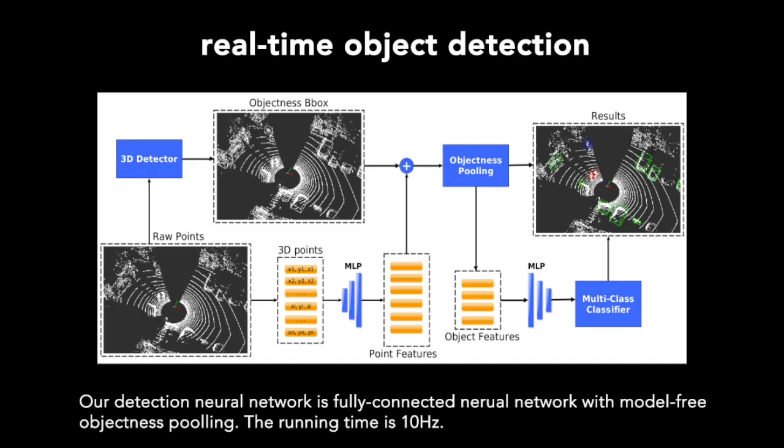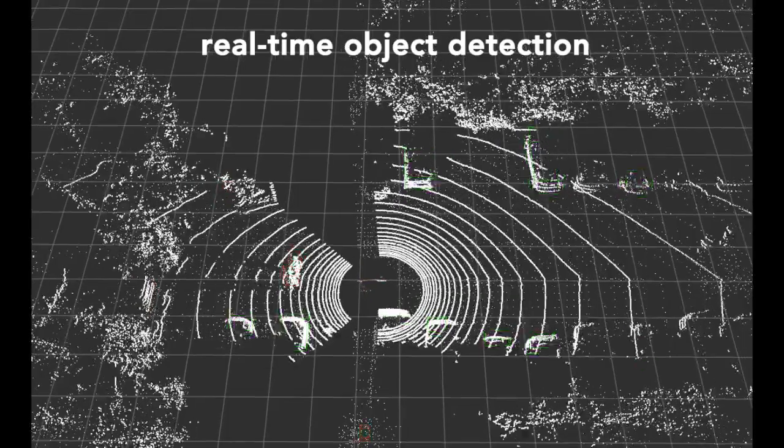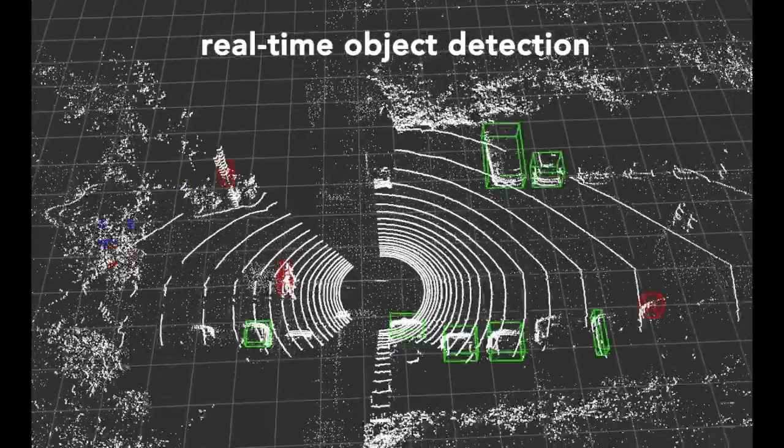Firstly, we proposed a deep neural network to detect objects in 3D LIDAR data. The detection is running in real-time.